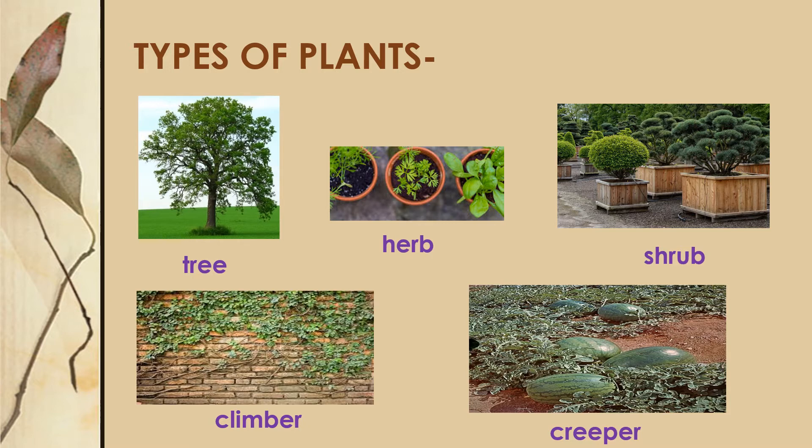The third picture shows us a shrub, which is generally a small, short plant with a woody stem. Climbers, as the picture shows, climb up with support — here the climber is taking the support of a wall. Creepers again have a weak, delicate, soft stem and are generally found spreading on the ground.